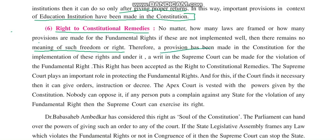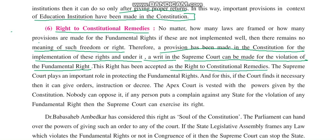Therefore, a provision has been made in the Constitution for implementation of rights. Under it, a writ in the Supreme Court can be filed for violation of fundamental rights. If any of the five rights is denied, you can directly file a writ in the Supreme Court. The Supreme Court plays an important role in protection of fundamental rights — it is the guardian of fundamental rights. The apex court is vested with this power by the Constitution and nobody can oppose it.